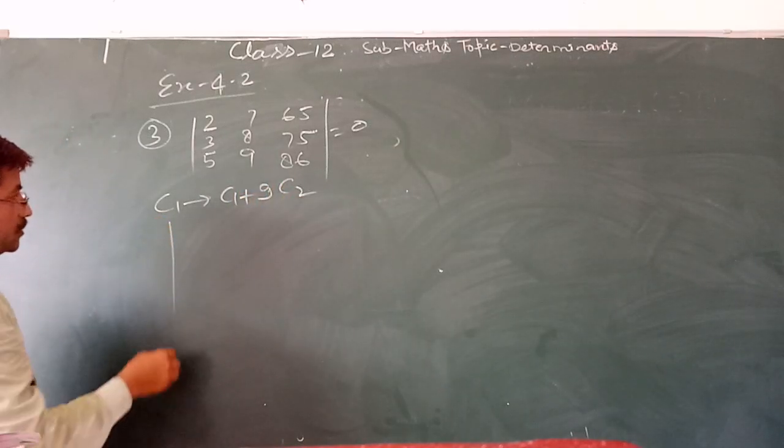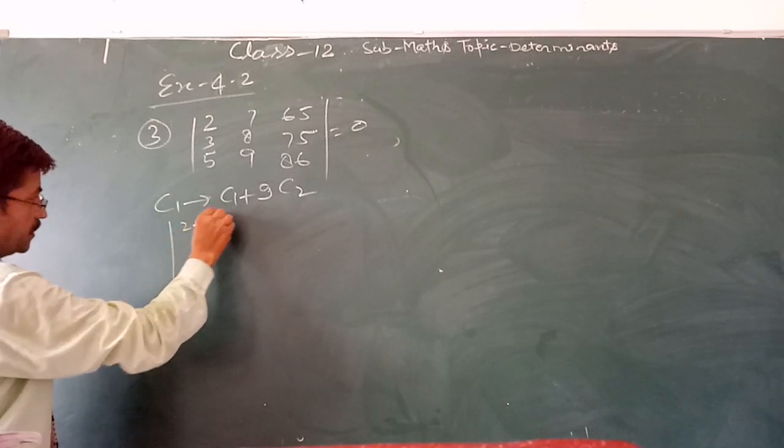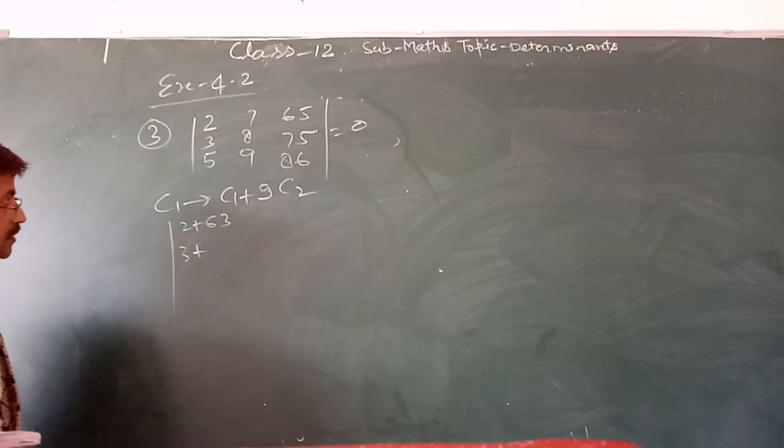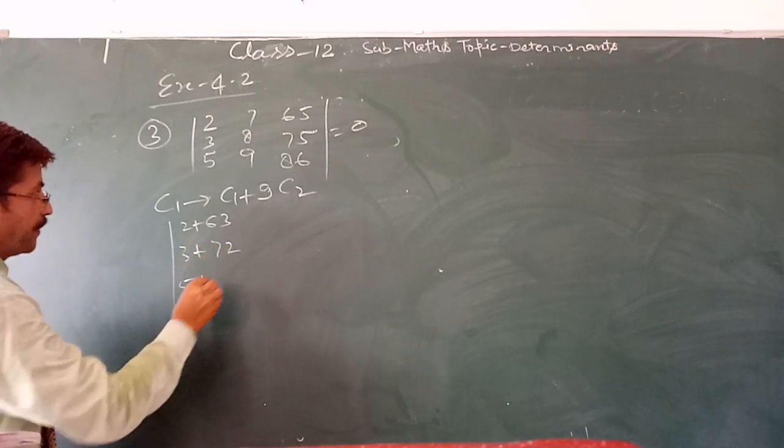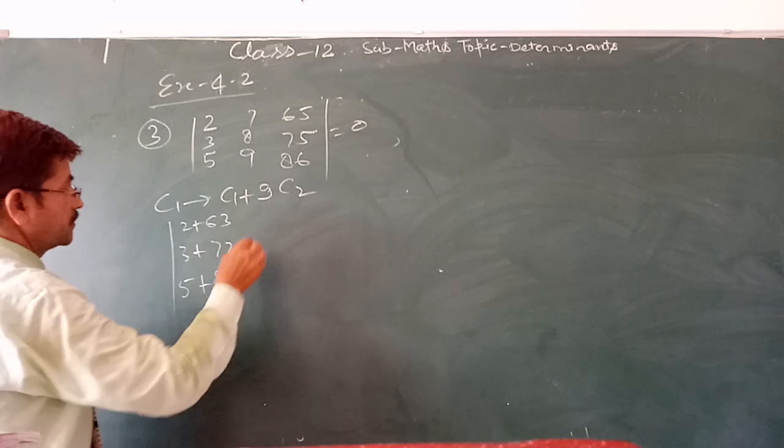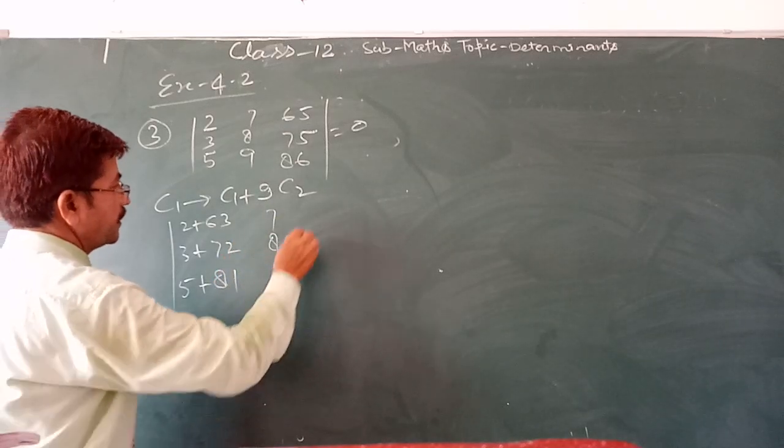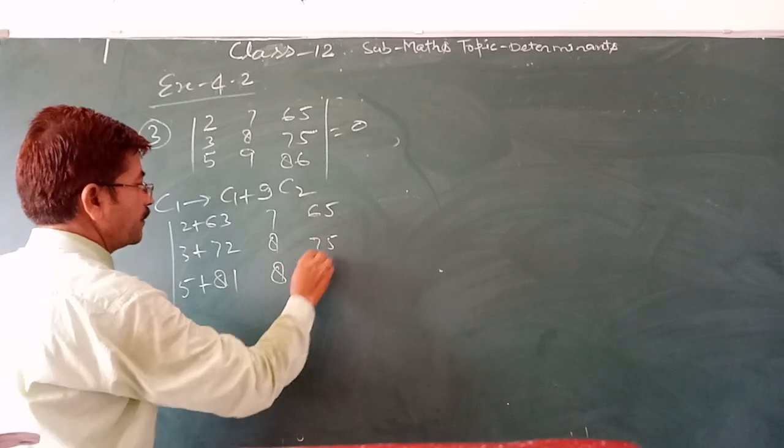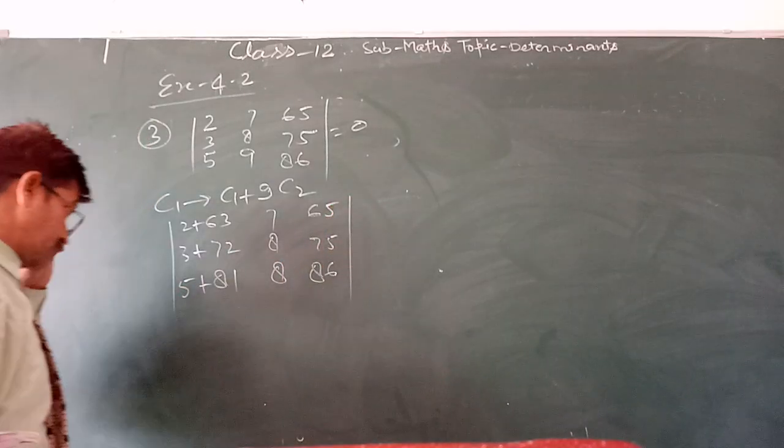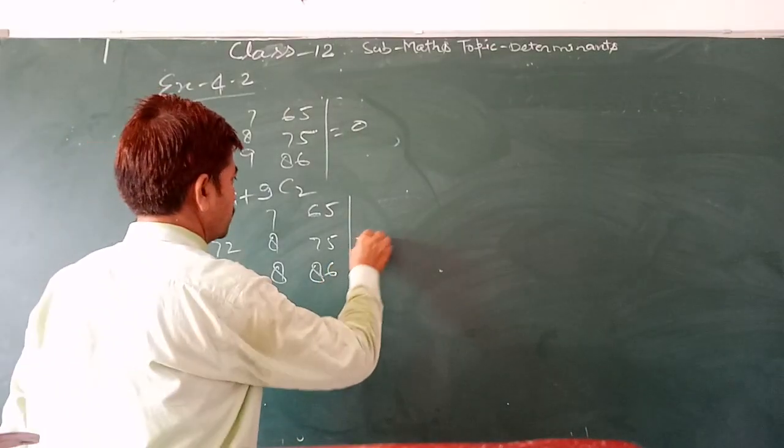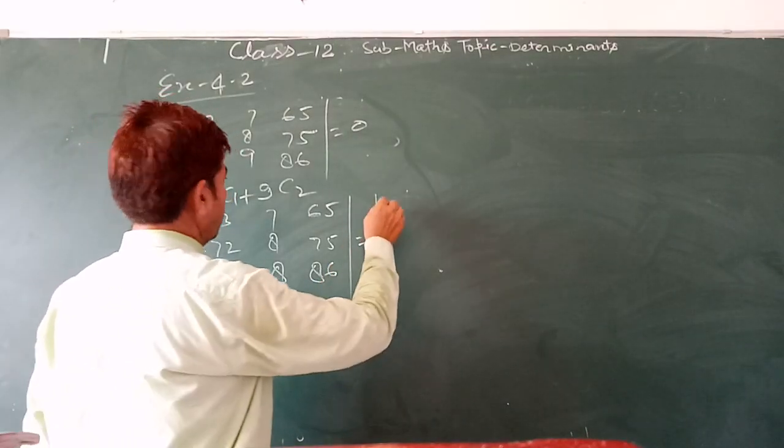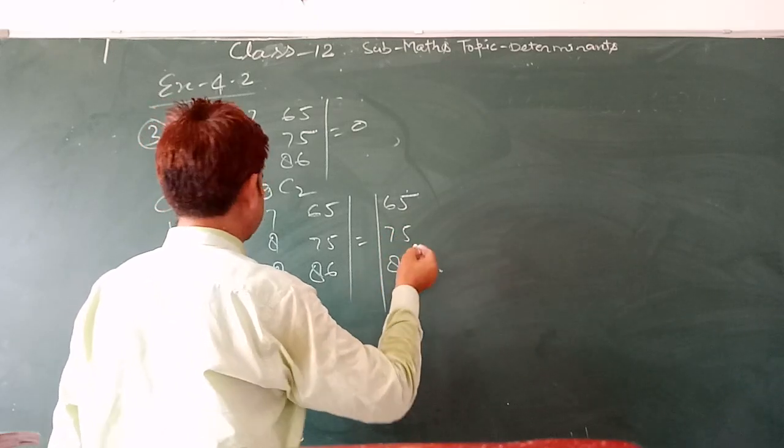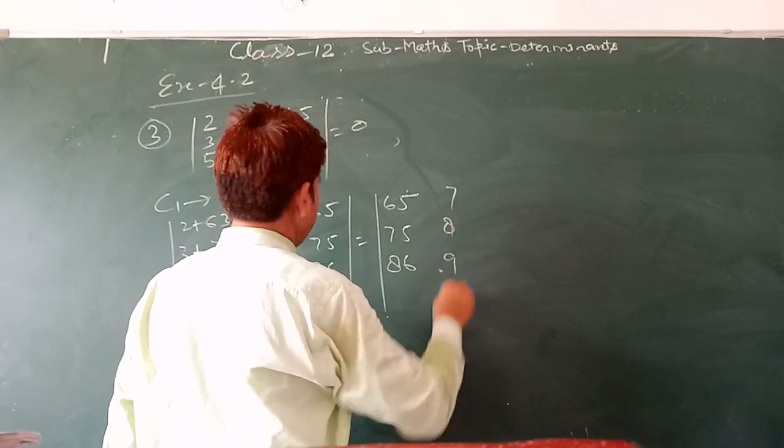Then it is equal to 2 plus 63, 3 plus 72, 5 plus 81, 7, 8, 9, 65, 75, 86. It is equal to 65, 75, 86, 7, 8, 9.